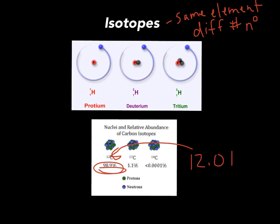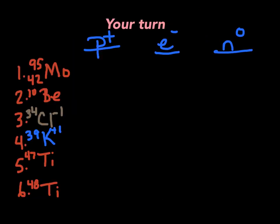To find protons, electrons, and neutrons for these isotopes: all of them have 6 protons, all have 6 electrons because they're atoms, but the number of neutrons changes — 6, 7, and 8. Here are 6 problems for you to try to find protons, electrons, and neutrons for each one. Some don't have the atomic number given, so look them up on your periodic table. If they don't have a charge, assume they are atoms. Good luck — have these done. Bye-bye.